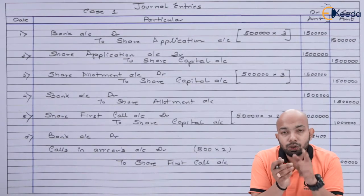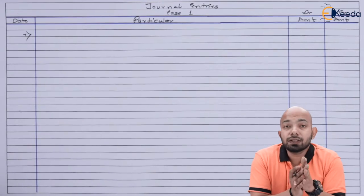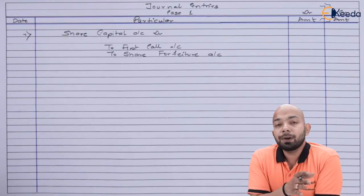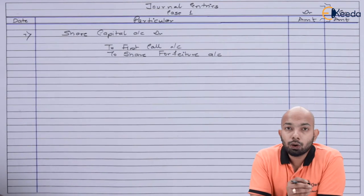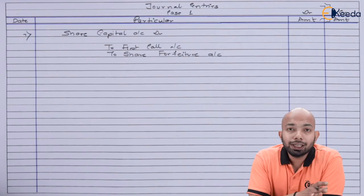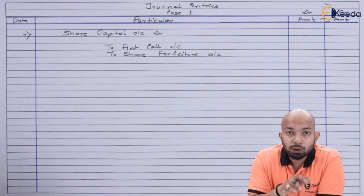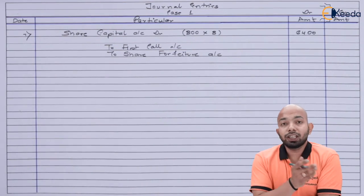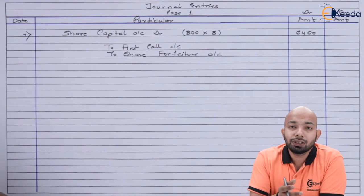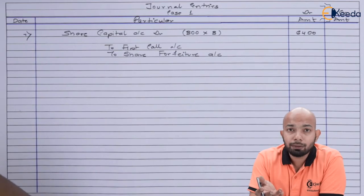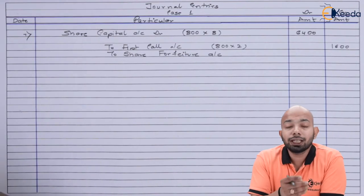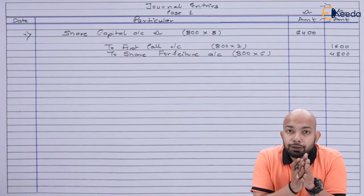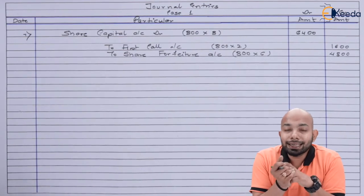After the first call, the company forfeited 800 shares. The share forfeiture entry is: Share Capital Account Dr. to Share Forfeiture Account and Calls in Arrears Account. Share Capital is debited with 800 shares multiplied by the called-up amount. Called-up amount until first call is ₹3 (application) + ₹3 (allotment) + ₹2 (first call) = ₹8, giving a debit of ₹6,400. Calls in Arrears is credited ₹1,600 (800 × ₹2 unpaid), and Share Forfeiture Account is credited ₹4,800 (800 × ₹6 already received — application + allotment).